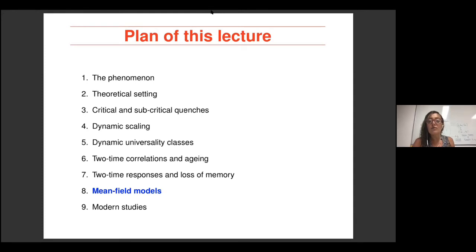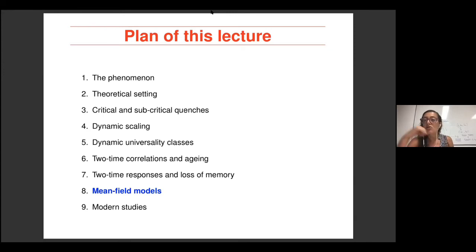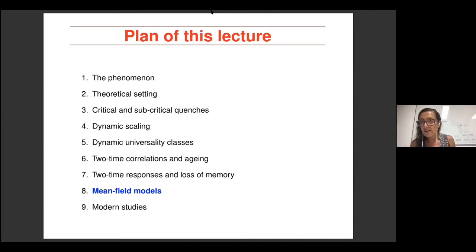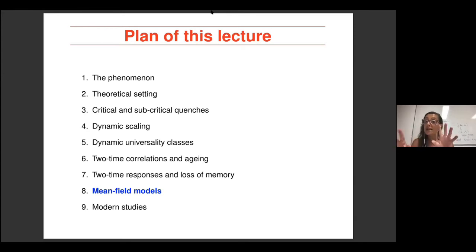A student asks whether FDTs also follow from the Langevin-like equation for the fields. Yes — you can prove FDTs in equilibrium for Langevin dynamics and also for Hamiltonian dynamics. The important thing is that you start from equilibrium, then evolve with either Langevin or Hamiltonian dynamics, and you will recover equilibrium FDTs. The Langevin dynamics must satisfy detailed balance; otherwise you break equilibrium. The friction term and noise-noise correlations must be related in a special way so that detailed balance is maintained.